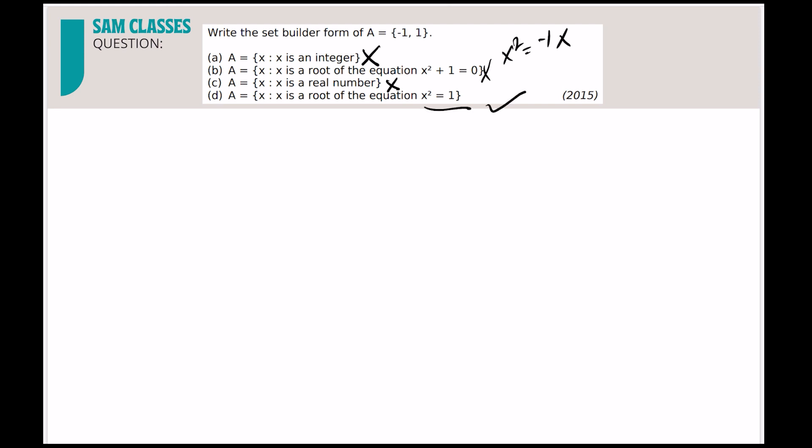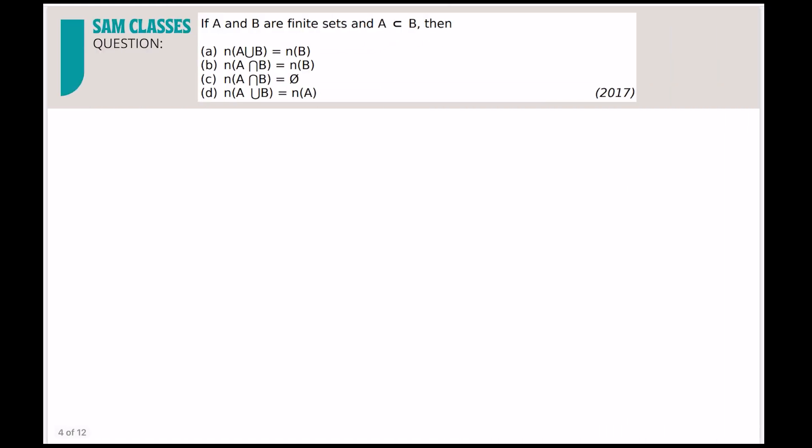So hardly how much, two seconds, that's it. Let's see: A and B are finite sets and A is a subset of B. The moment A is a subset of B, remember that if this is the B set, A should lie inside. If this is the B set, A should lie inside, and the union will be nothing but just B. That's it.